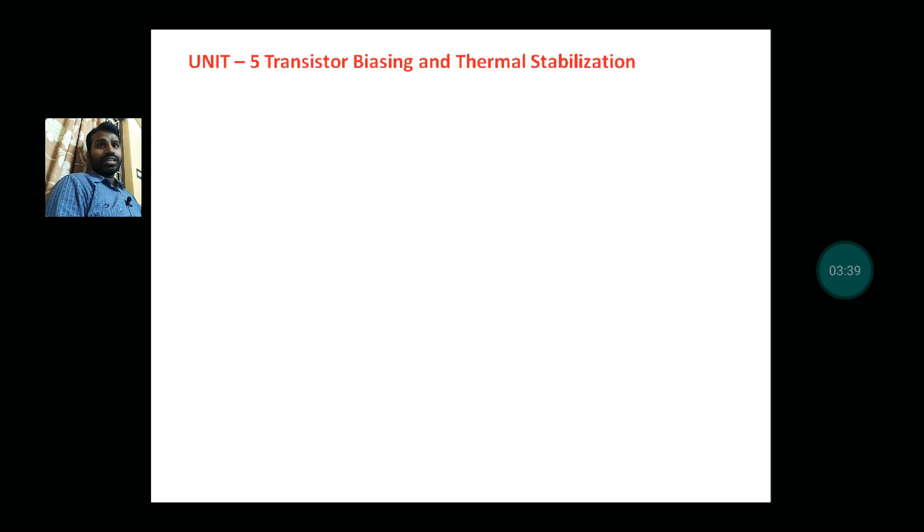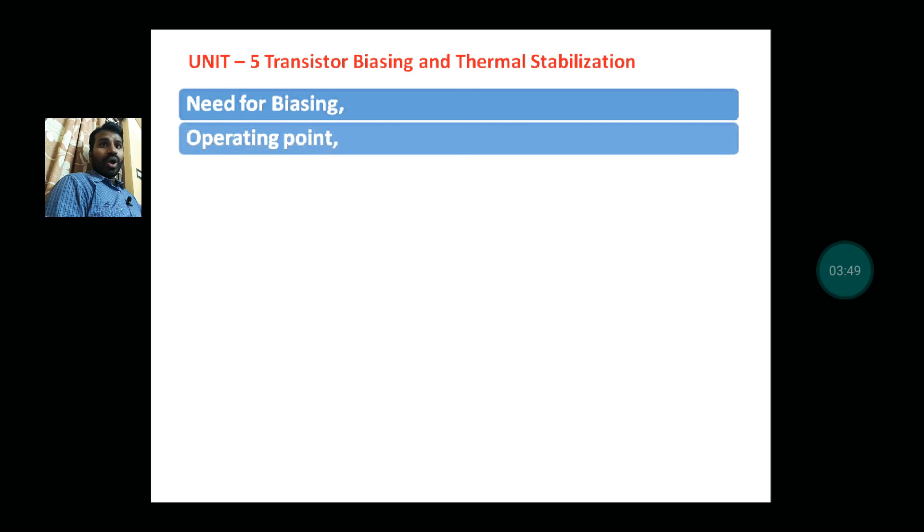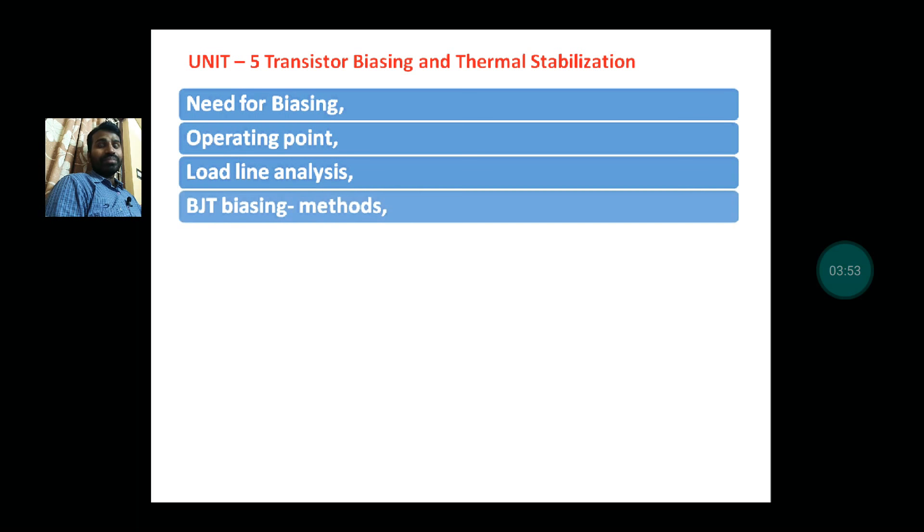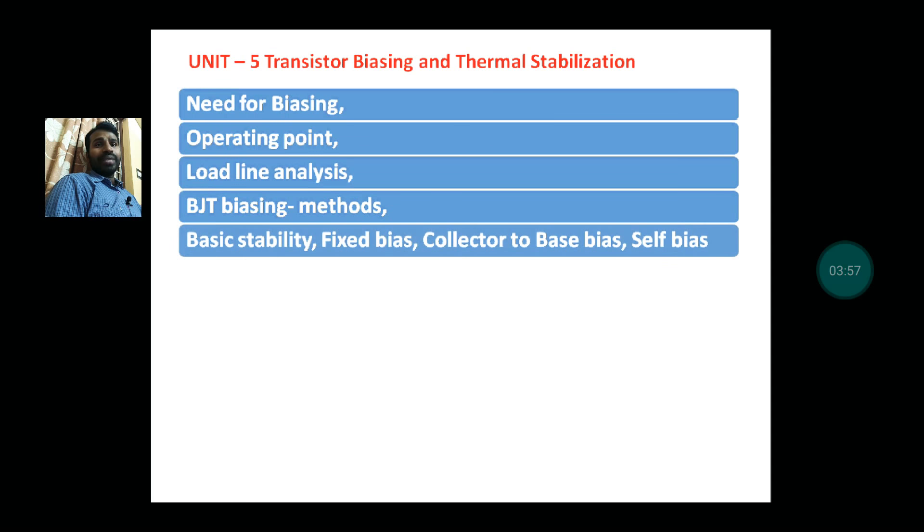In fifth unit, Transistor Biasing and Thermal Stabilization, in the topics are need for biasing, operating point or Q-point, load line analysis, BJT biasing methods—basic stability, fixed bias, collector-to-base bias, self-bias.